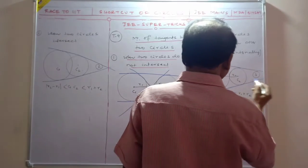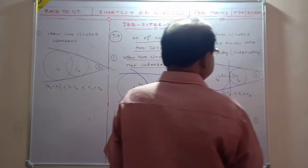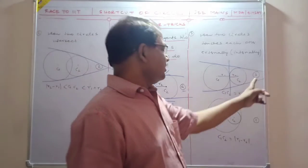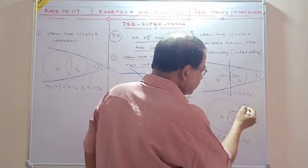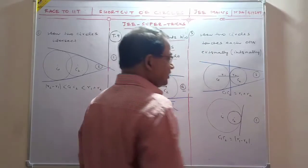You can draw two tangents like this. Number of tangents, common tangents is three. And you can draw one tangent. So that is just one.